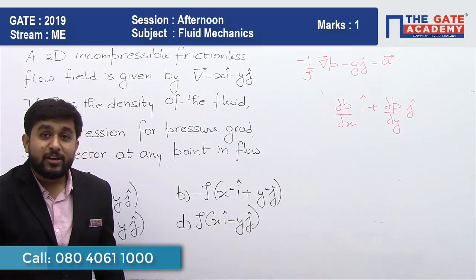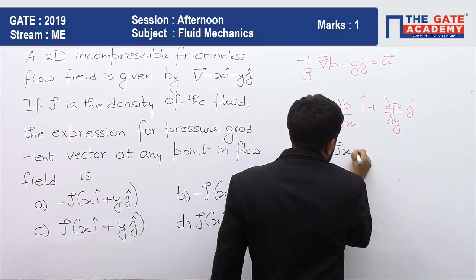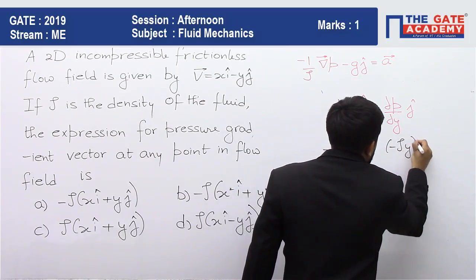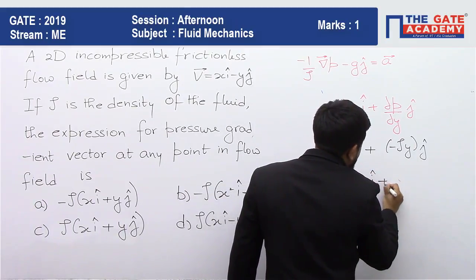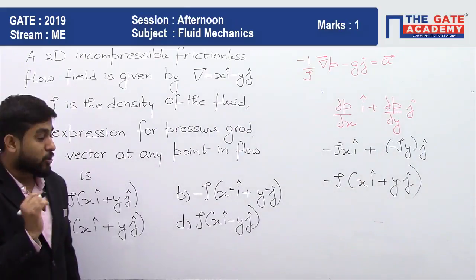So what we have is minus rho x i cap plus minus rho y j cap. So minus your rho you can take it as common. So this becomes minus rho times x i cap plus y j cap. So this is your pressure gradient in the horizontal plane.